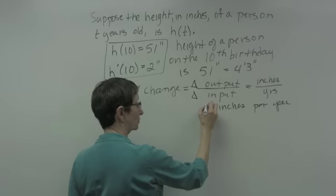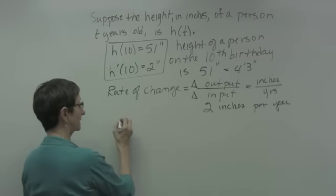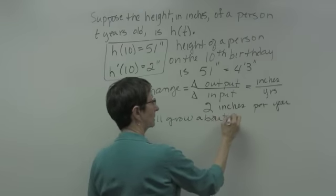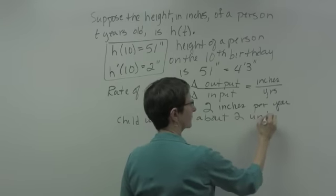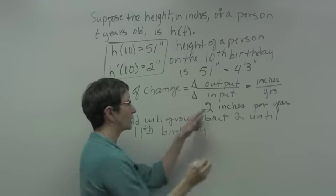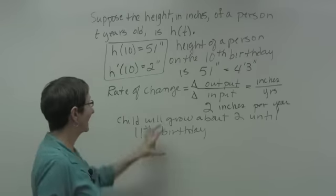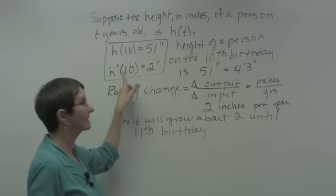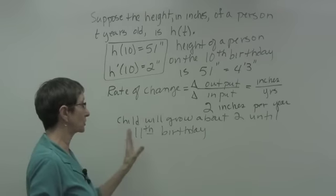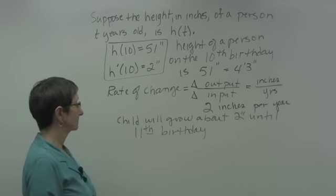So the child grows about 2 inches over 1 year — from the 10th birthday to the 11th birthday, the child should grow about 2 inches. The input is years and the output is the change in height, so this is 2 inches of change in height over the next year.